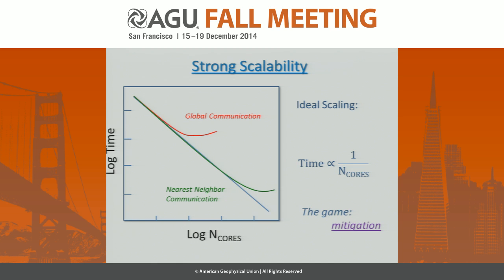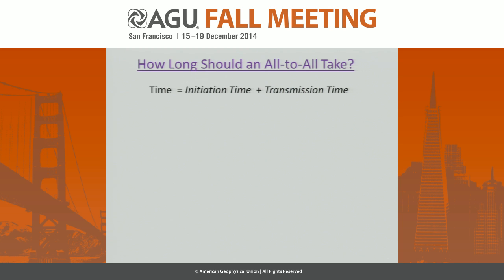No matter what you do with a global code, you'll never run as well as finite volume or finite difference codes. The name of the game here is mitigation — how do we mitigate this roll-off effect to stretch this curve down a little bit further? So I'd like to ask a simple question: how long should an all-to-all take?